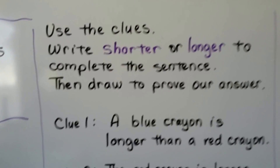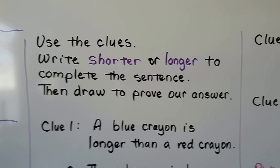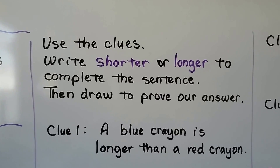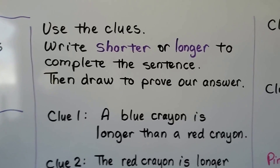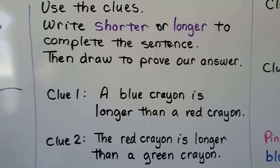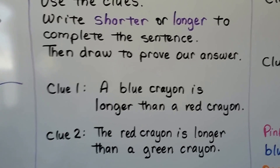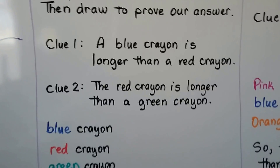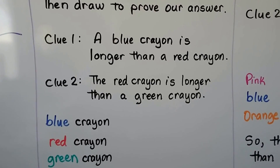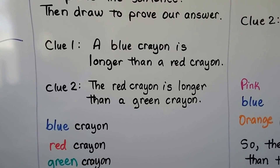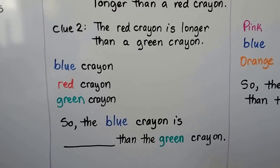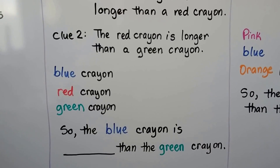We can use the clues and write shorter or longer to complete the sentence, then draw to prove our answer. Clue 1 says a blue crayon is longer than a red crayon. Clue 2 says a red crayon is longer than a green crayon. We need to draw the crayons and fill in shorter or longer to make the sentence true.